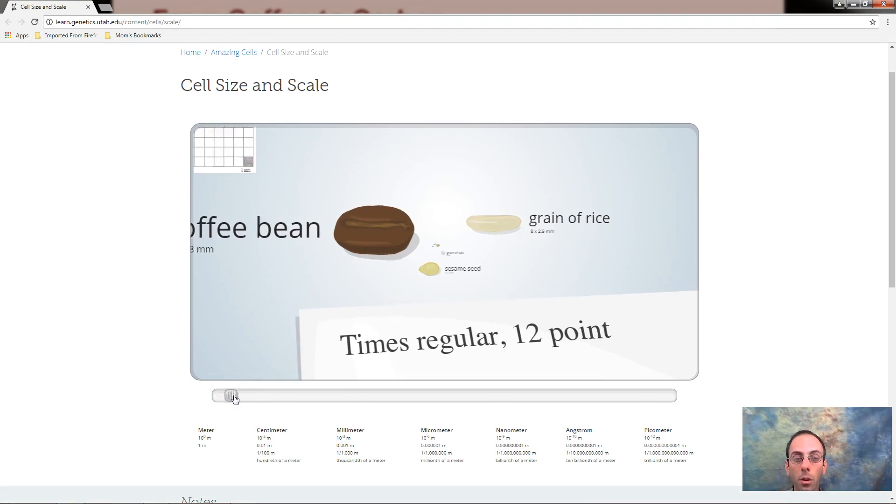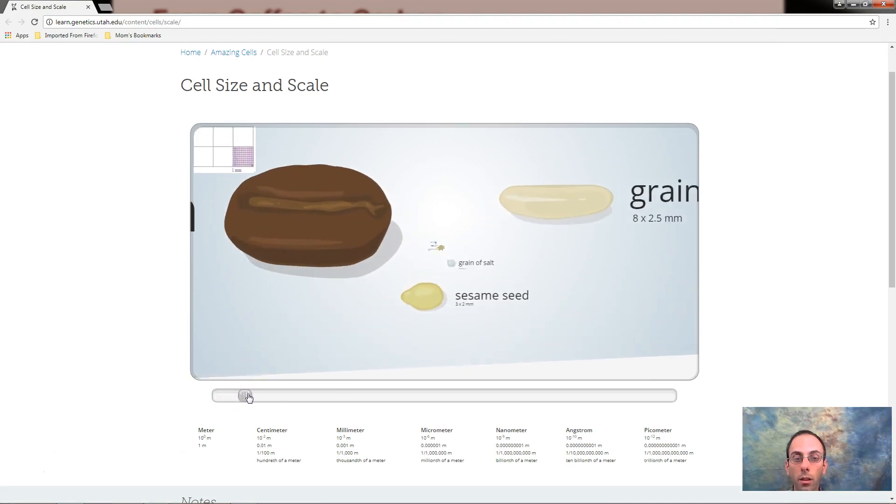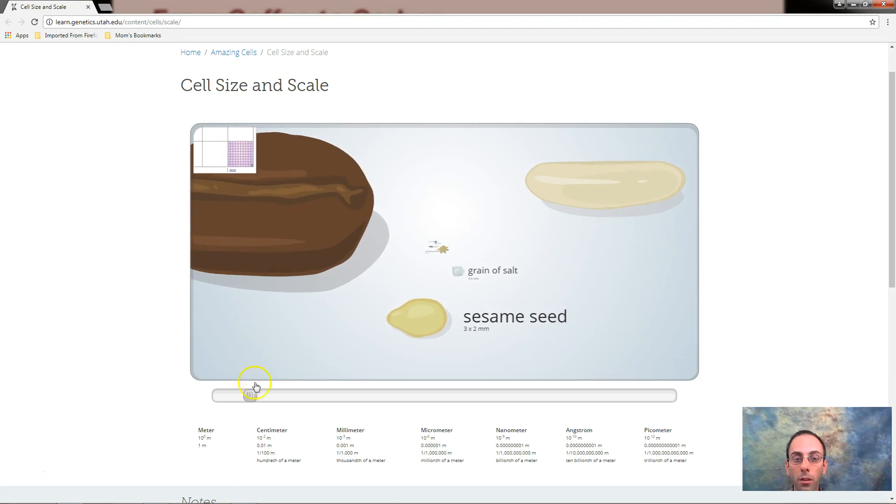And we can start to zoom in. You notice the coffee bean, we're zooming in, how big that coffee bean looks like to a grain of salt for comparison. A grain of salt is quite large compared to these things. So you can zoom in and see some of those.